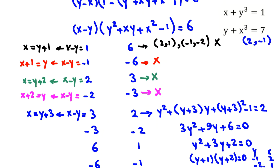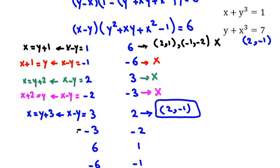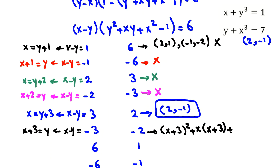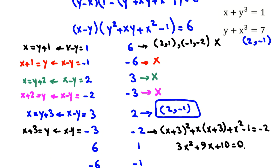For x minus y equals −3: y equals x plus 3. Replacing and simplifying gives a left-hand side whose remainder when divided by 3 is 1, but the right-hand side is 0 — a contradiction. So this case yields no solution.